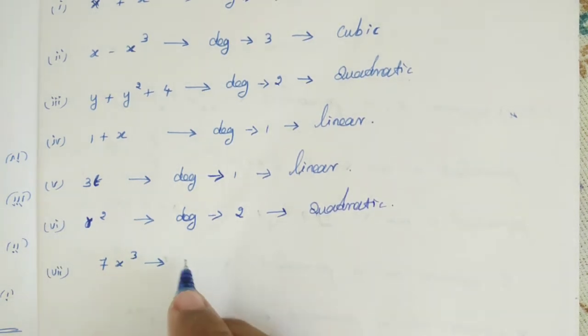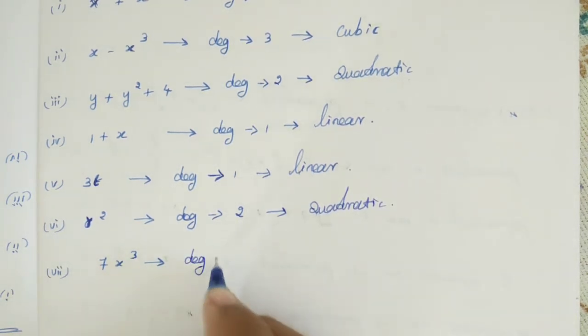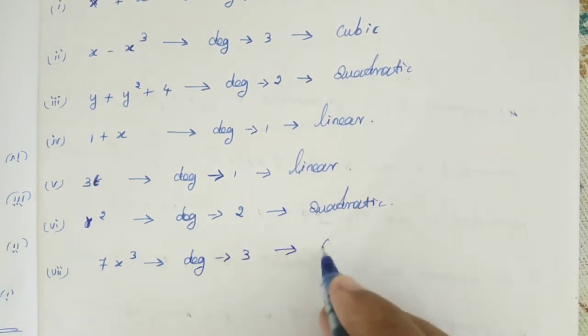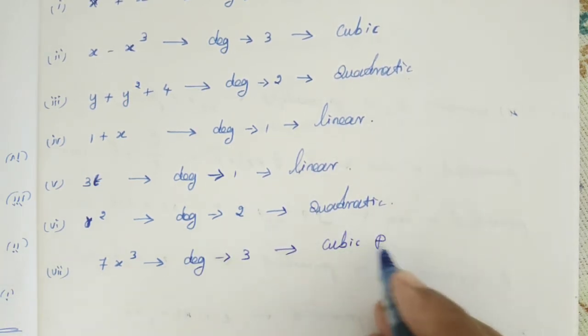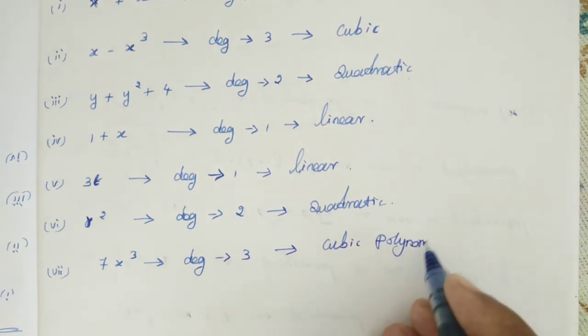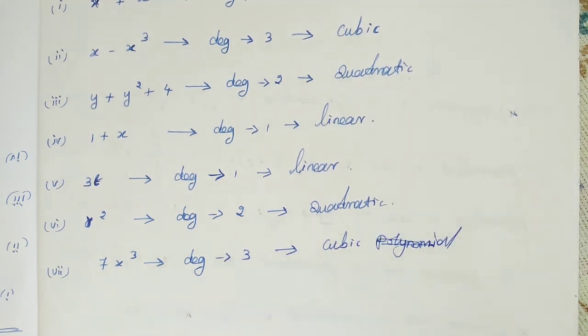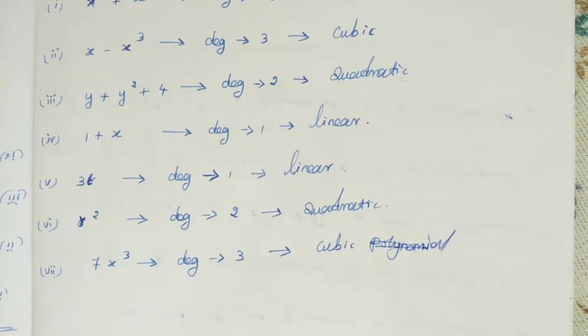Here, 7X cube. X cube. So degree cube 3. That is cubic polynomial. Cubic polynomial. Clear?